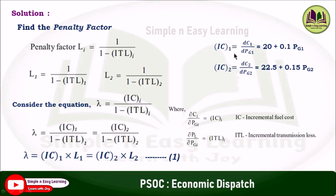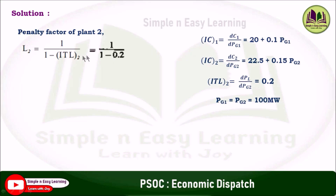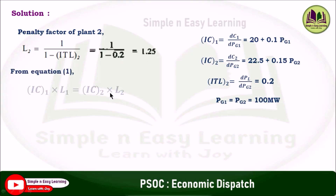In the problem, IC1 and IC2 are given, and the incremental transmission loss for plant 2 is given as 0.2. We will use these values to find the penalty factor for plant 1. First, we find the penalty factor for plant 2: L2 = 1 / (1 − ITL_2). Since ITL_2 = 0.2, L2 = 1 / (1 − 0.2) = 1.25. From equation 1: IC1 · L1 = IC2 · L2.